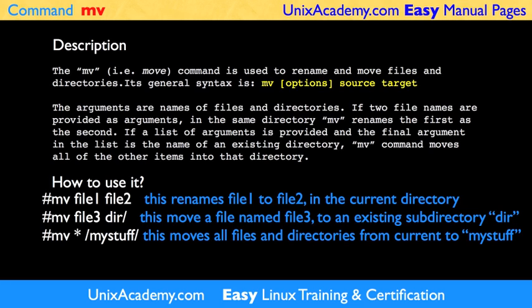If both are in different directories, then the source file is moved to the directory named in the target argument, in which it can keep its original name or be assigned a new name. If the target is a directory, then the source file or directory is moved into that directory and retains its original name.